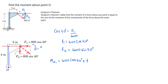We consider the clockwise moment to be positive and the counterclockwise moment to be negative. So for F1: 600 cosine of 40 degrees multiplied by four meters gives us a value of 1838.5 newton meters. That is the moment for F1, which is the x-component of the force.